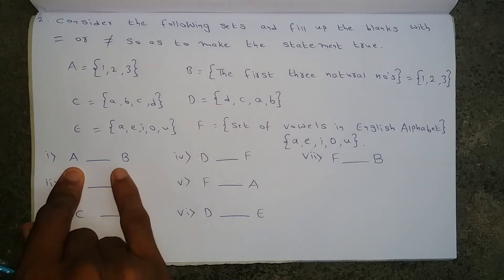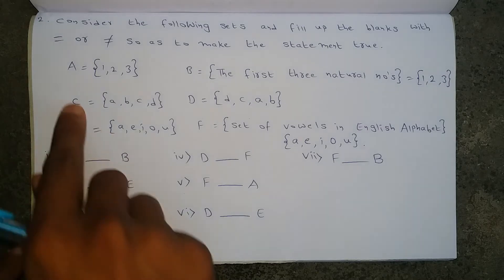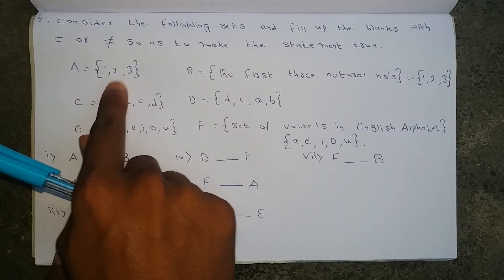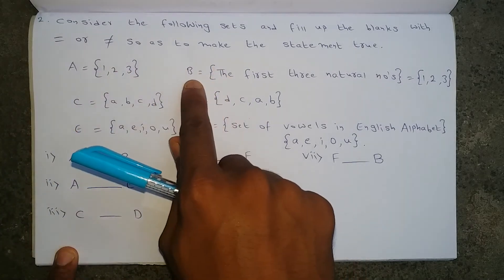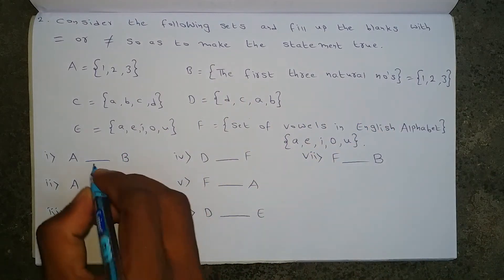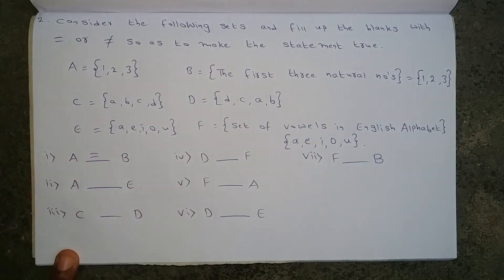Now let us fill in the blanks. For set A and set B, we just need to confirm whether these two sets are equal or not. Set A has elements 1, 2, 3 and set B also has the same elements 1, 2, 3. So set A and set B are both equal.